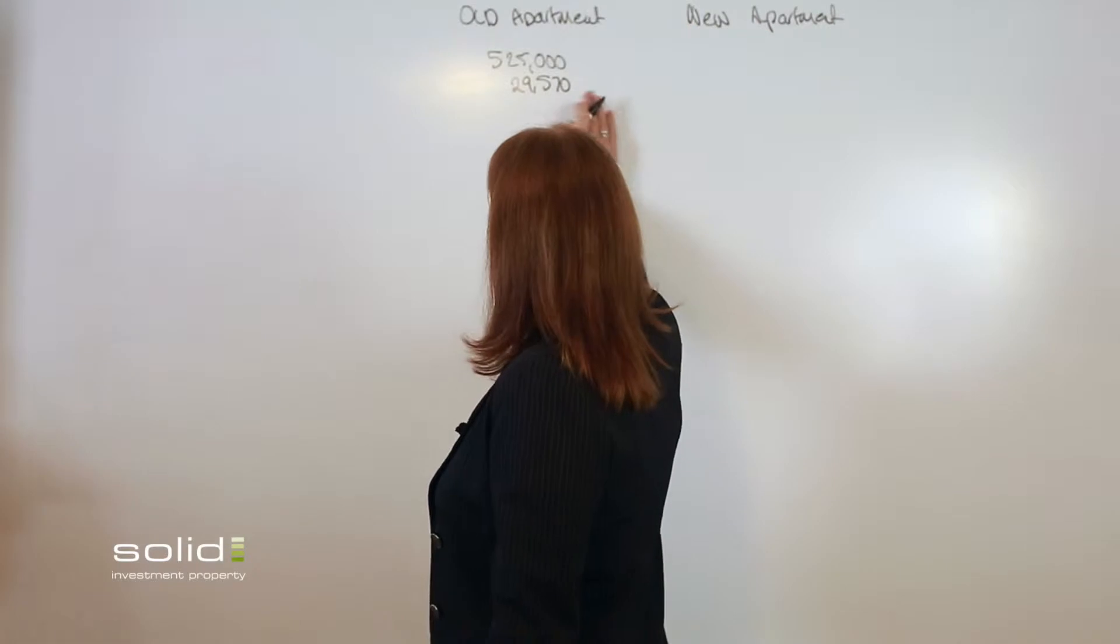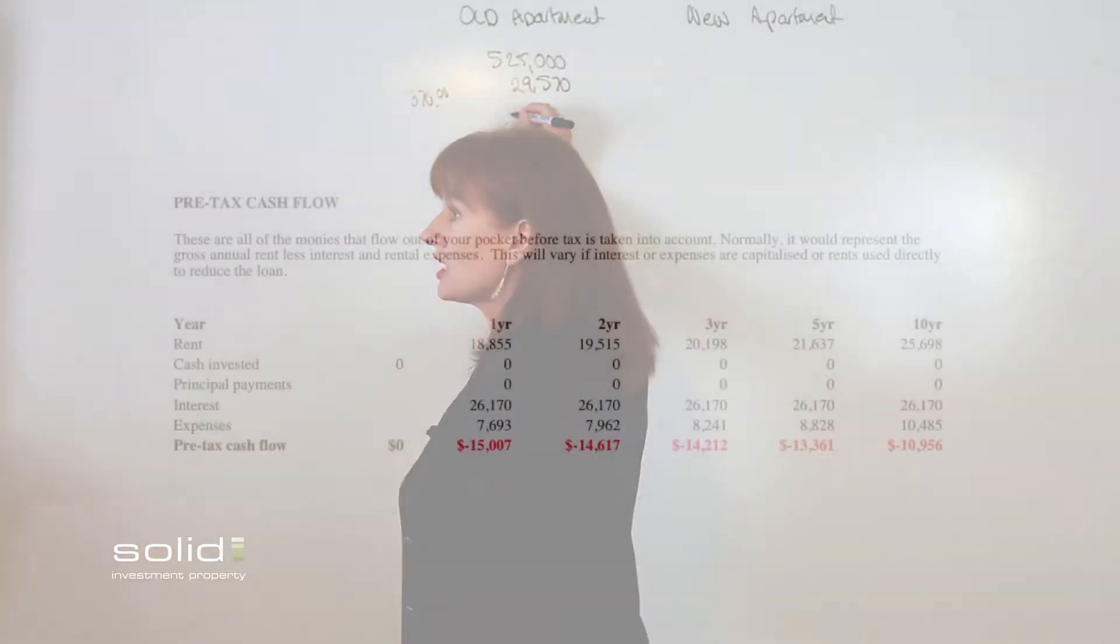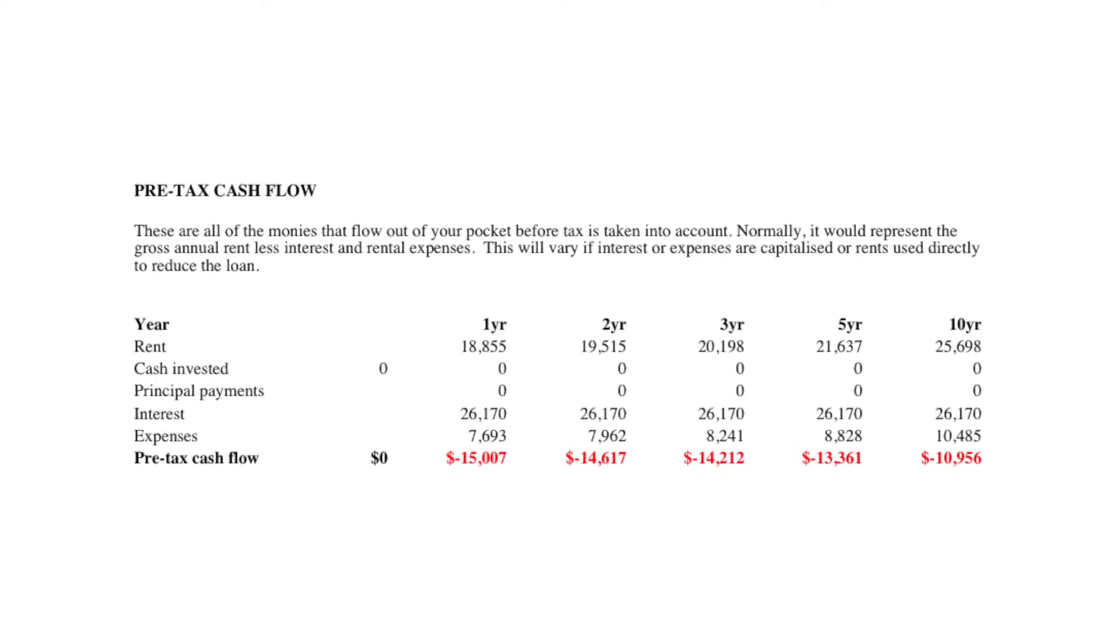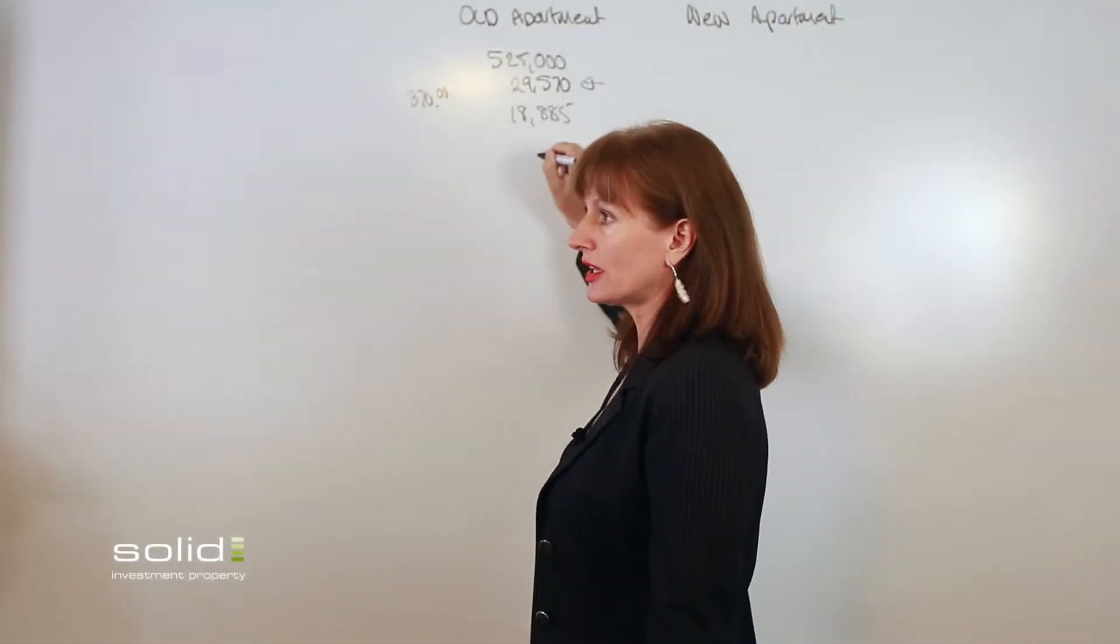So the rental, when you look at the rental figure at $370, the income for the property is $18,885. Okay, so this is a capital cost. This is your actual income.